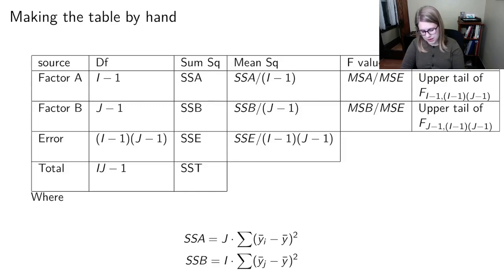I guess the other thing that's kind of new is the degrees of freedom are a little bit less complicated here. So our degrees for factor A are going to be I, the number of groups for that factor, minus one.